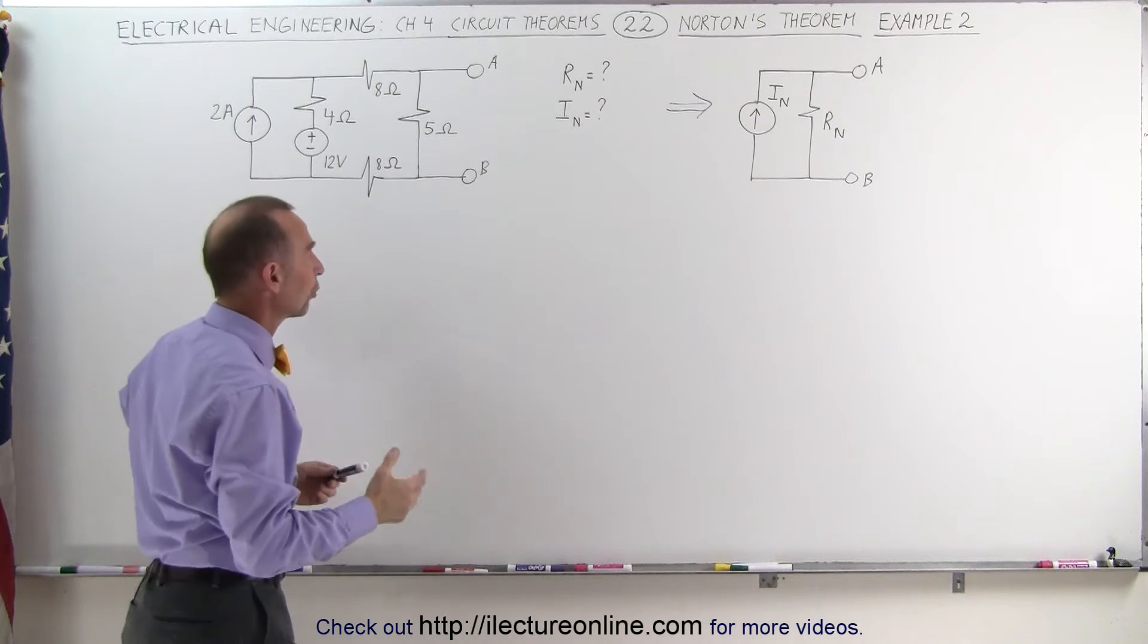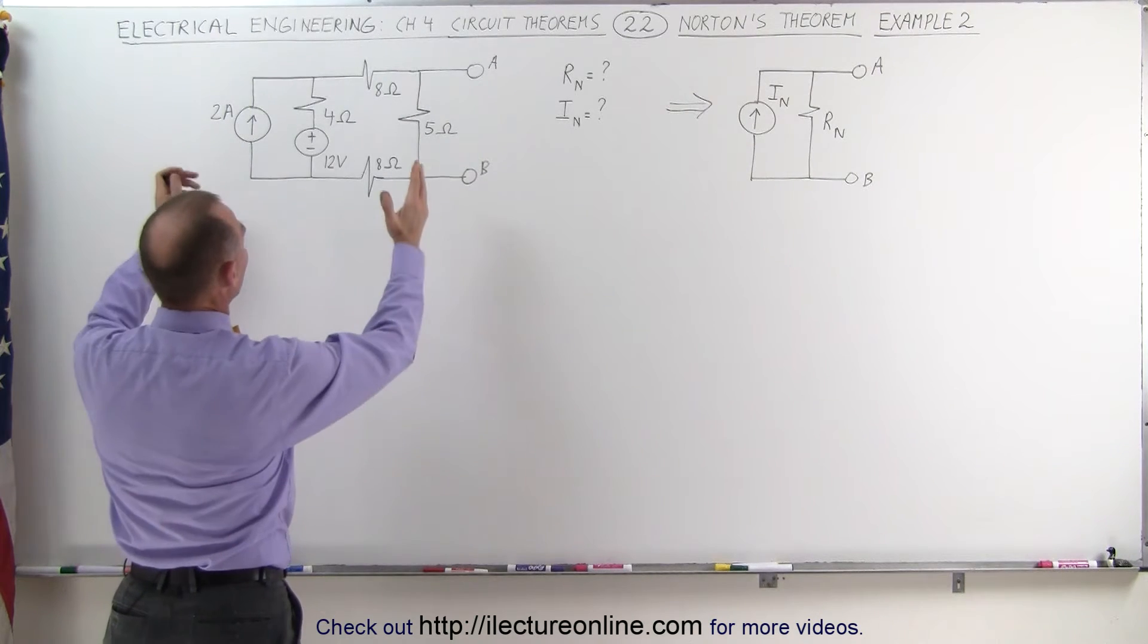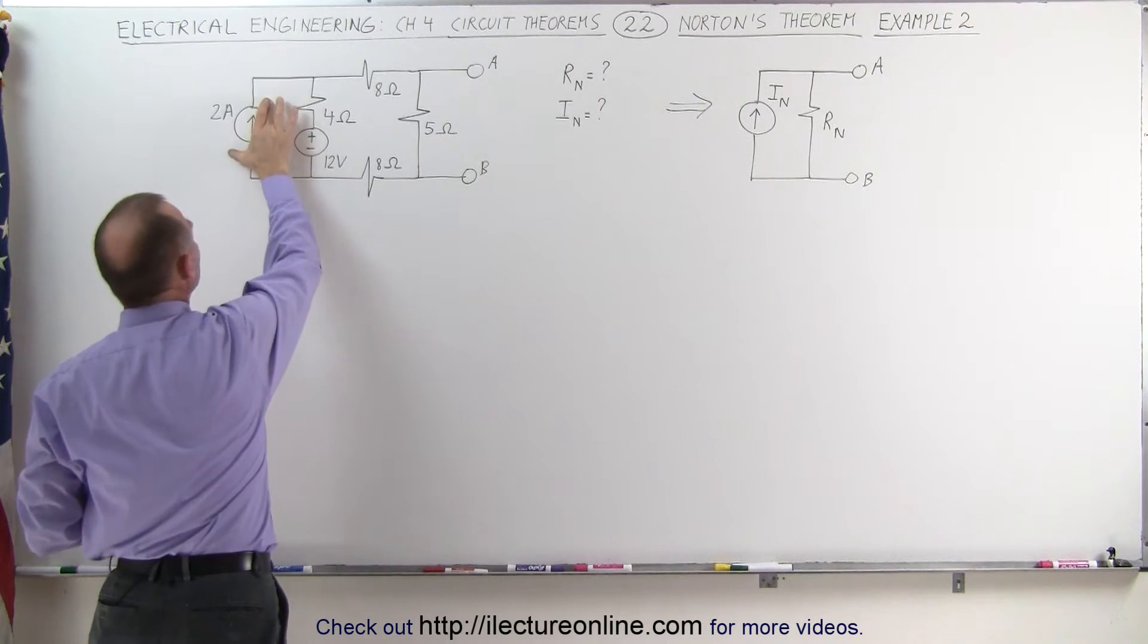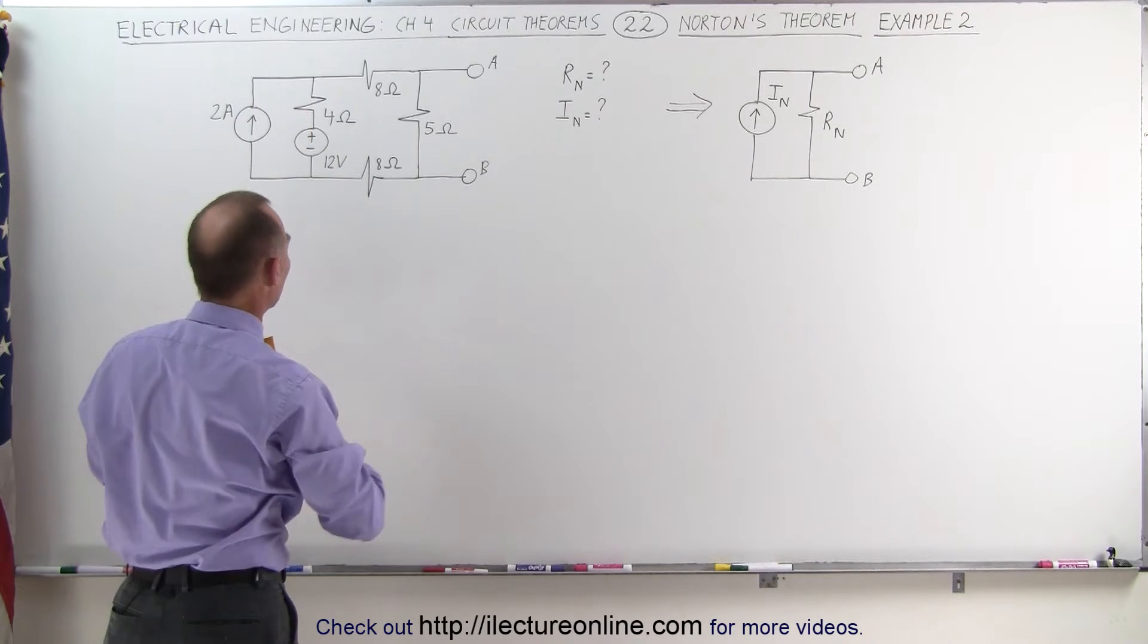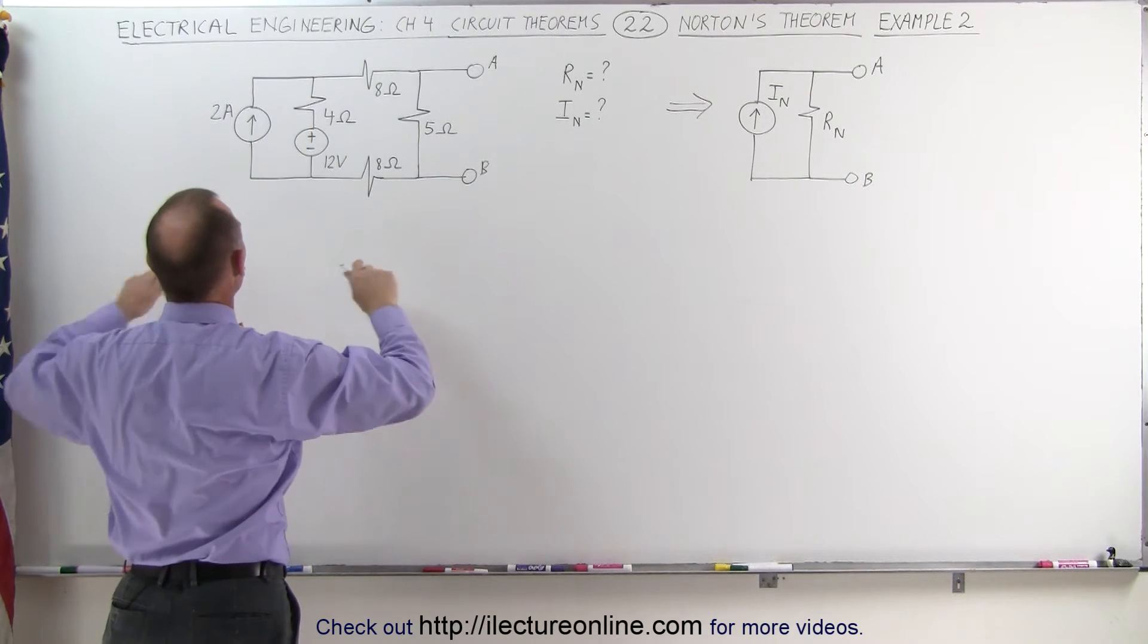First we'll find the Norton resistance which means we take our original circuit, remove any current sources and set any voltages equal to zero. This circuit will then look as follows.